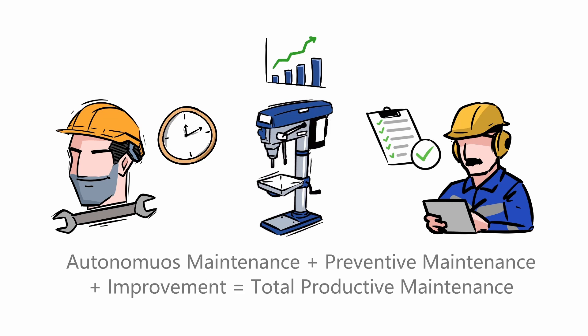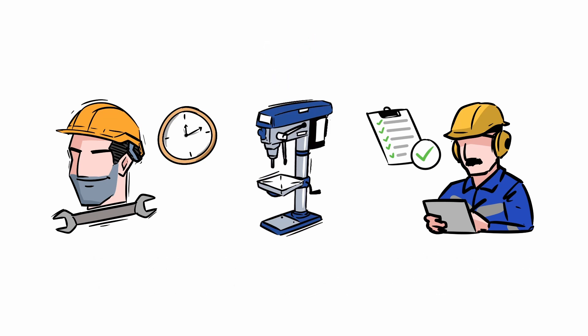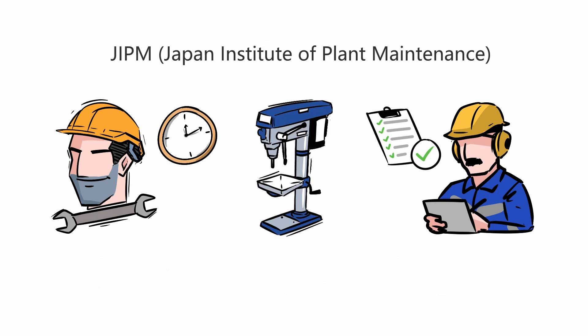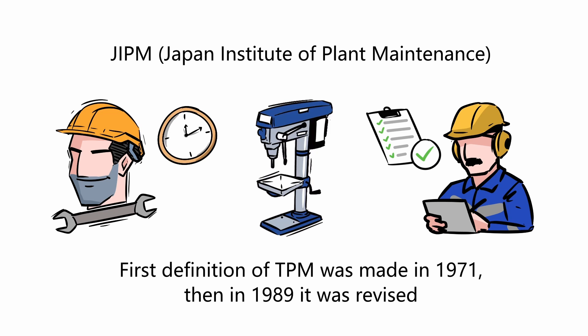According to the JIPM, Japan Institute of Plant Maintenance, the first definition of TPM was made in 1971, and then in 1989 it was revised.